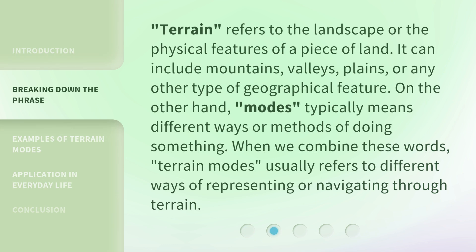Terrain refers to the landscape or the physical features of a piece of land. It can include mountains, valleys, plains, or any other type of geographical feature. On the other hand, modes typically means different ways or methods of doing something. When we combine these words, 'Terrain Modes' usually refers to different ways of representing or navigating through terrain.